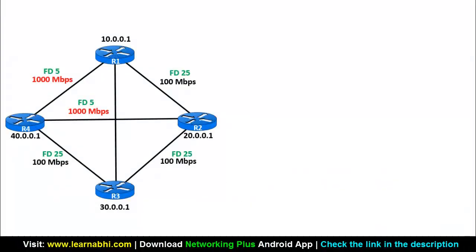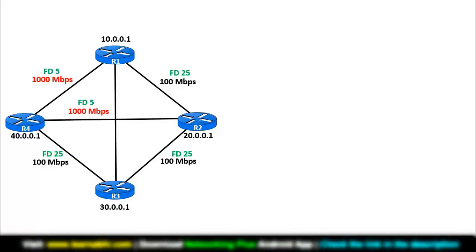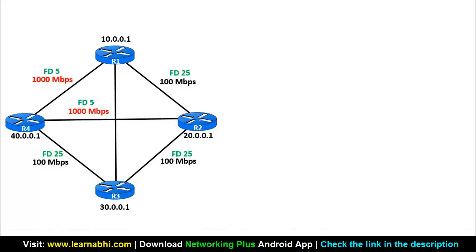Now here is the live example where I will explain how the EIGRP protocol works and how it chooses the route, so it will be easy to understand. In my next video, I will explain how to configure EIGRP in a computer network using Packet Tracer. Now let's find out how EIGRP creates a route and chooses the best possible route to send the packets. In this example, there are four routers connected to each other, and to reach each router there are four possible routes. I am going to show how Router 1 can reach Router 2 using EIGRP.